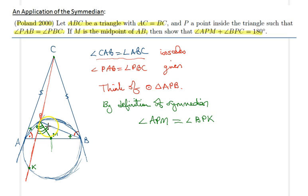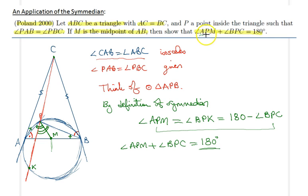Notice that angle BPK is supplementary to angle BPC. So therefore, it is 180 degrees minus angle BPC. And using these two, I realize that angle APM plus angle BPC is simply equal to 180 degrees, as desired.